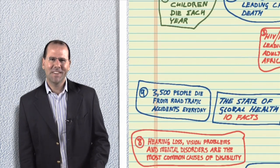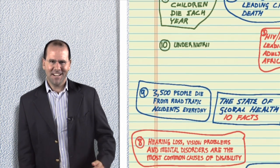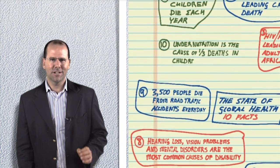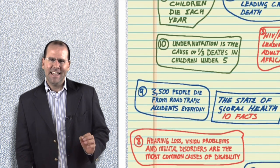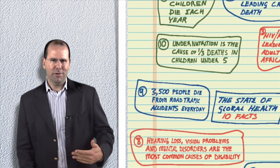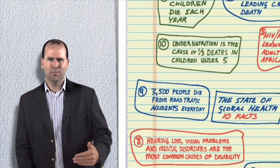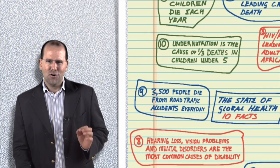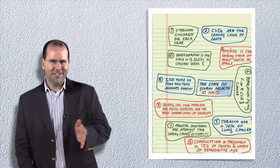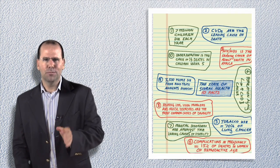Fact number ten: undernutrition is the underlying cause of death for at least one-third of all children under the age of five. Inadequate breastfeeding, inappropriate food, and a lack of access to highly nutritious foods contributes to the problem. Common childhood diseases affect a child's ability to eat or absorb necessary nutrients.